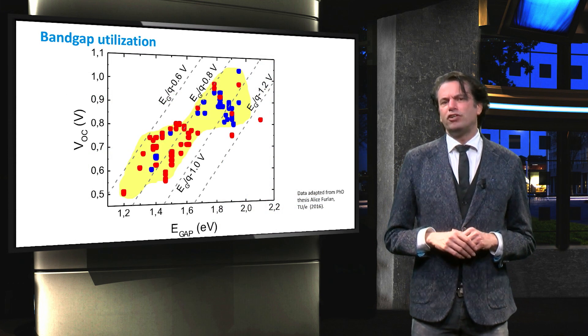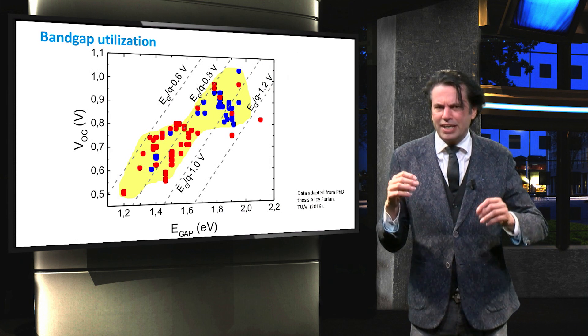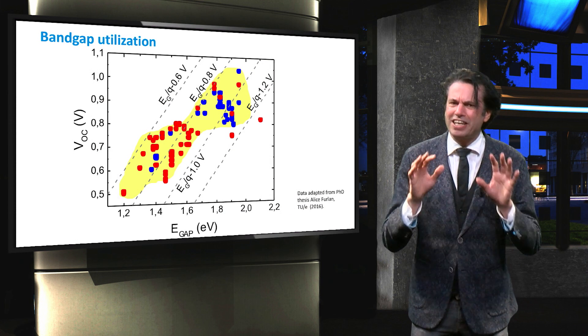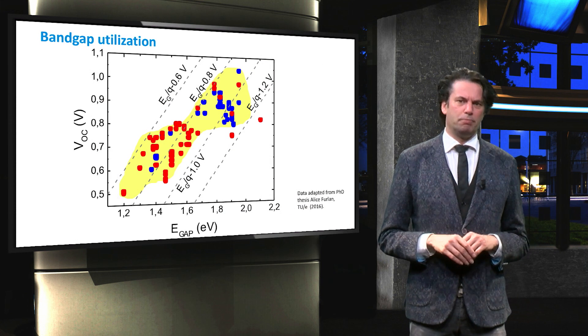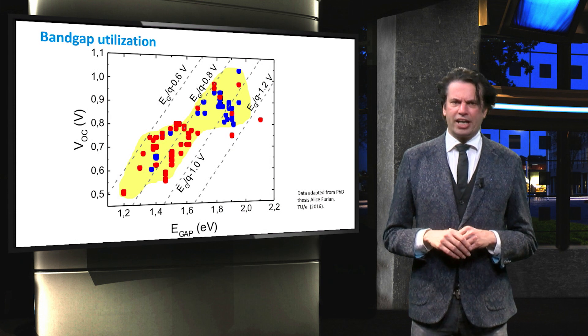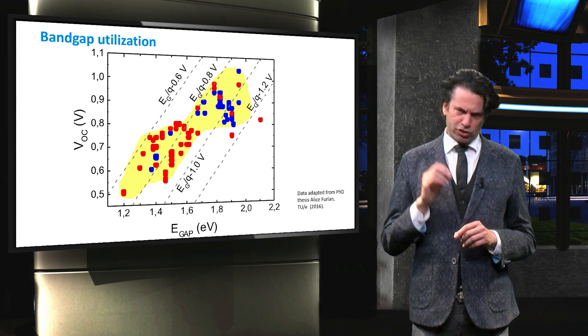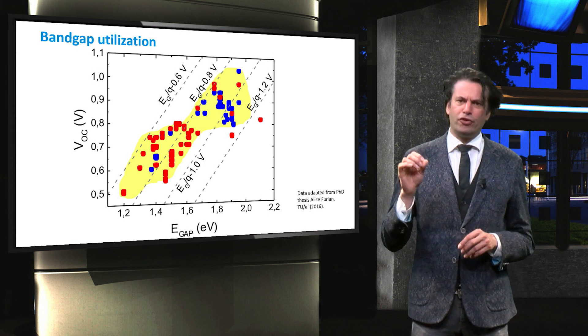With a conversion efficiency of 12.1 percent, organic single junctions do not even get close to the Shockley-Queisser limit. Typical organic devices suffer from various loss mechanisms.